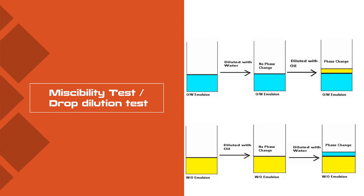Considering the miscibility test or drop dilution test, the main thing to consider is what is the dispersed phase and what is the continuous phase. When you have clarity on dispersed and continuous phase, you can easily identify which type of emulsion it is. If you don't know the type — take a beaker, add some emulsion, add some water. If there is no phase change, it is oil in water. Then add oil; if there is a phase change, that confirms oil in water type.